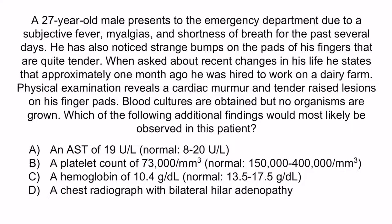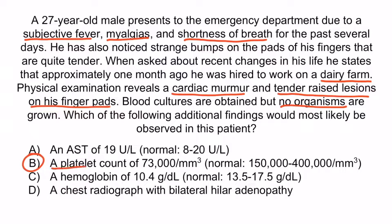Let's go through the highlights. The patient has had a subjective fever, myalgias, and shortness of breath. He recently began working on a dairy farm. Physical examination has revealed a cardiac murmur and tender raised lesions on his finger pads — these are called Osler nodes and are highly suggestive of bacterial endocarditis. Blood cultures didn't reveal any organisms. Collectively, these clues should make you think of culture-negative endocarditis. The part of the question stem about the dairy farm is suggestive of recent exposure to cattle, which should make Coxiella Burnetii the most likely diagnosis. So the correct answer is B, a platelet count of 73,000.